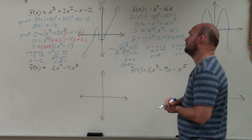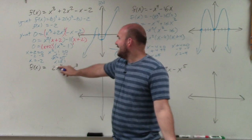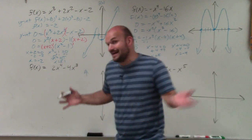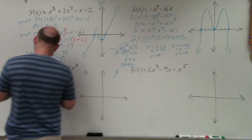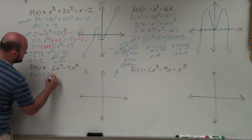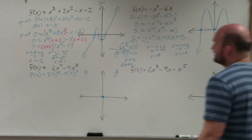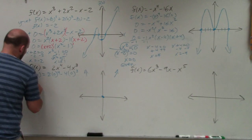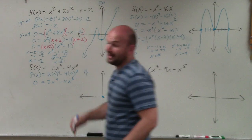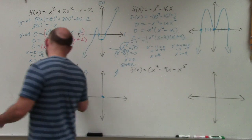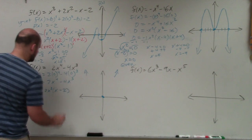Let's look at the next one. The end behavior: we have an even degree again, but now our leading coefficient is positive, so the end behavior is going to rise left, rise right. The y-intercept: f(x) = 2(0)⁴ − 4(0)³, which gives 0 — same intercept, 0. Then finding the x-intercepts, we set 0 = 2x⁴ − 4x³ and factor: both share 2x³, so 0 = 2x³(x − 2).